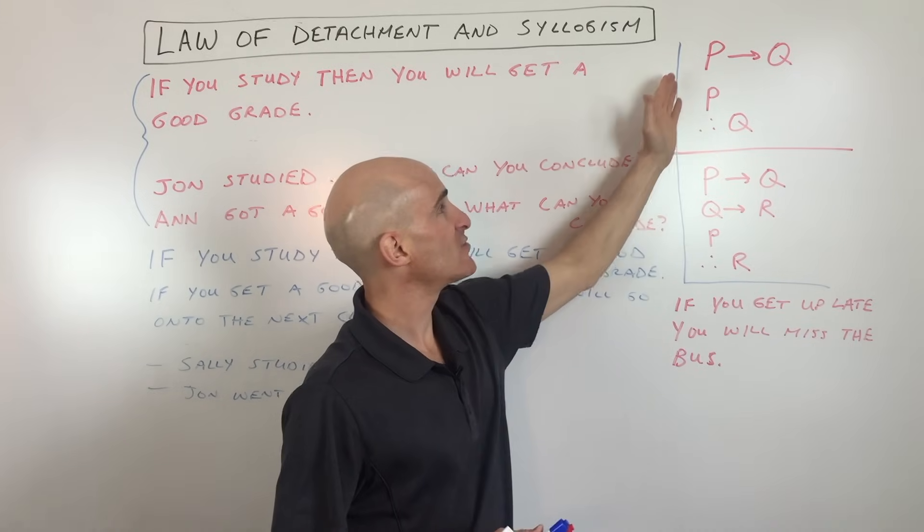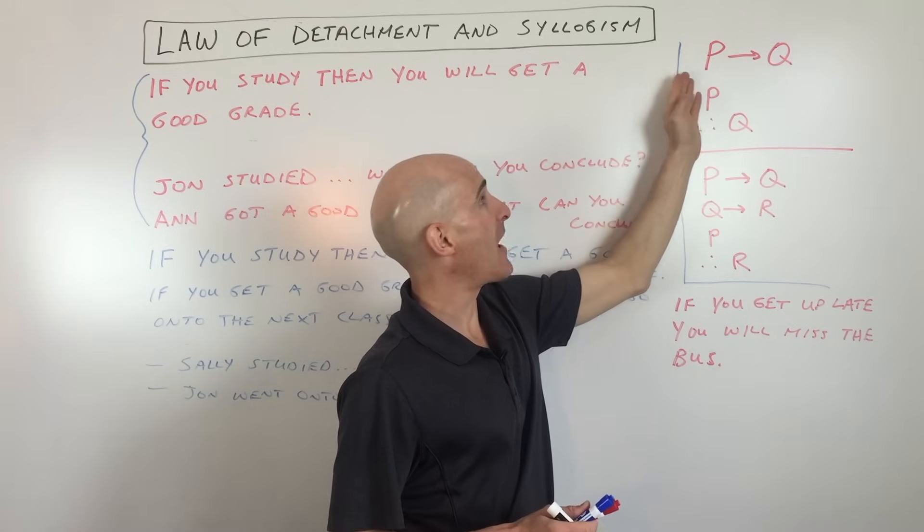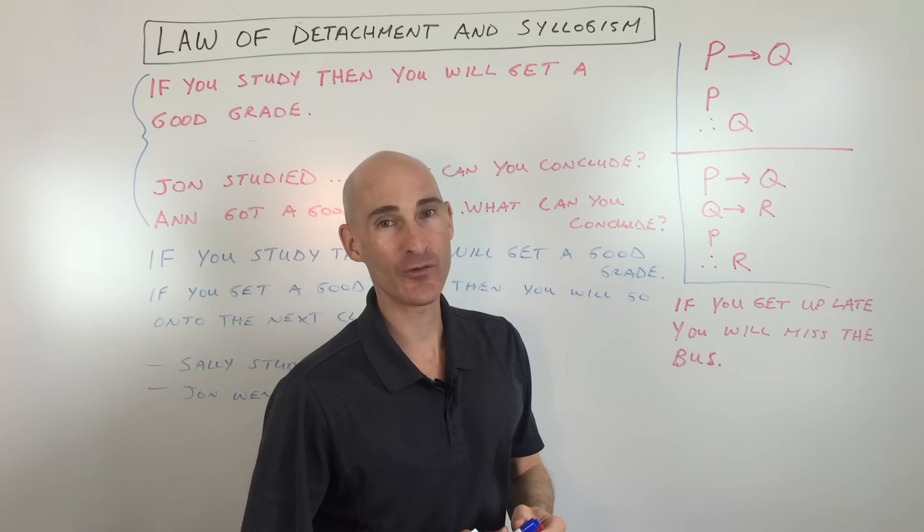So the law of detachment basically involves two quantities, the hypothesis and the conclusion. If the hypothesis happens, then the conclusion will naturally follow from that.